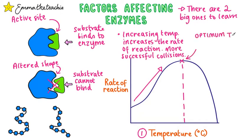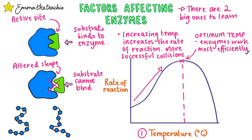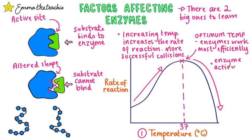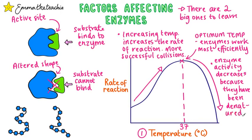The optimum temperature is where enzyme activity is at its highest. In humans, this temperature is around 37 degrees Celsius, as this is the temperature at which our enzymes work best. In other organisms it can be different. Increasing the temperature beyond the optimum will cause enzyme activity to decrease because the enzyme has been denatured.